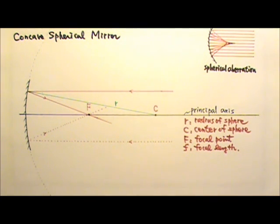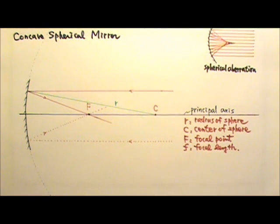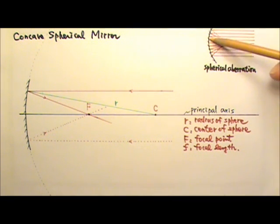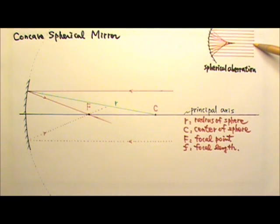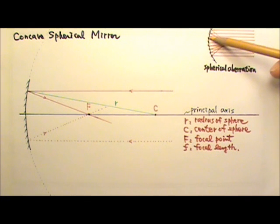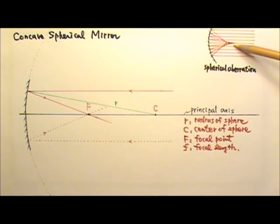However, parabolic mirrors are harder to make and are more expensive, so we still often use spherical mirrors. In order to reduce spherical aberration, we can use small spherical mirrors — small in size compared to the radius of the mirror. For small mirrors, paraxial rays would almost meet at one single focal point.